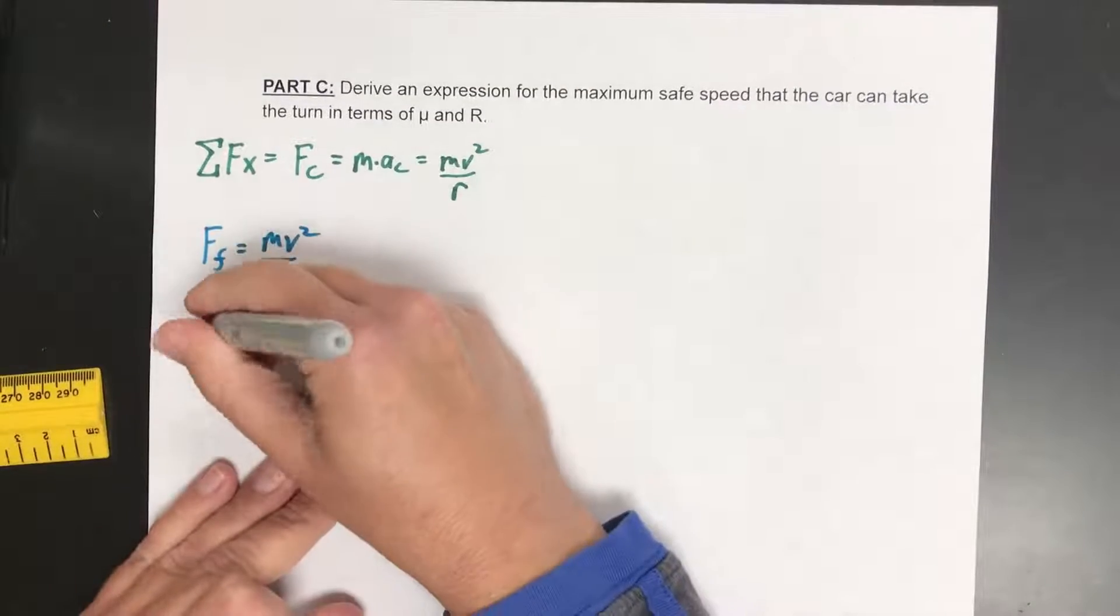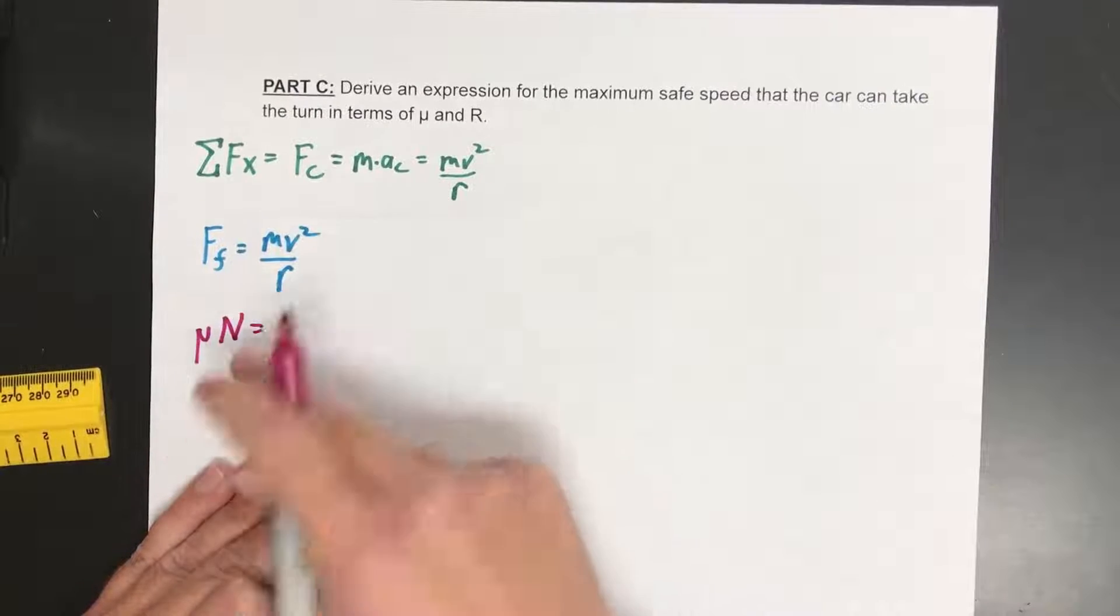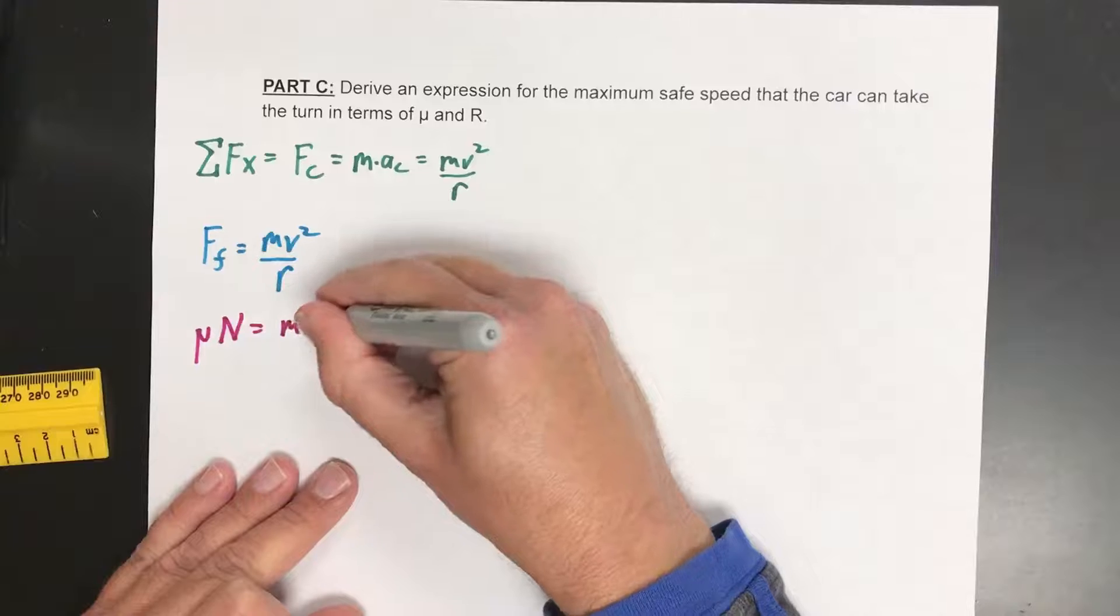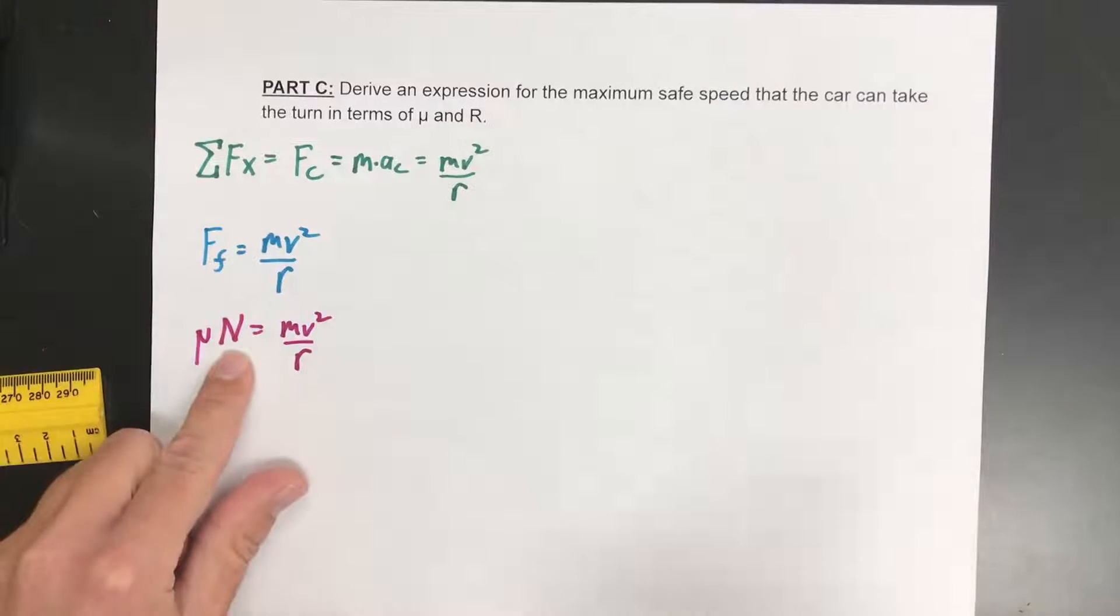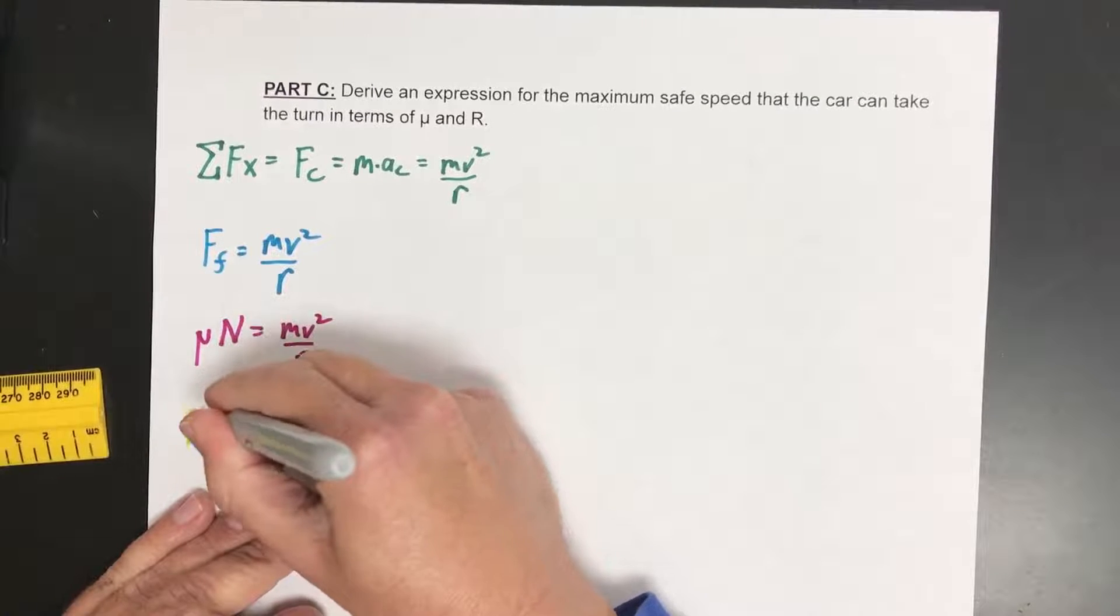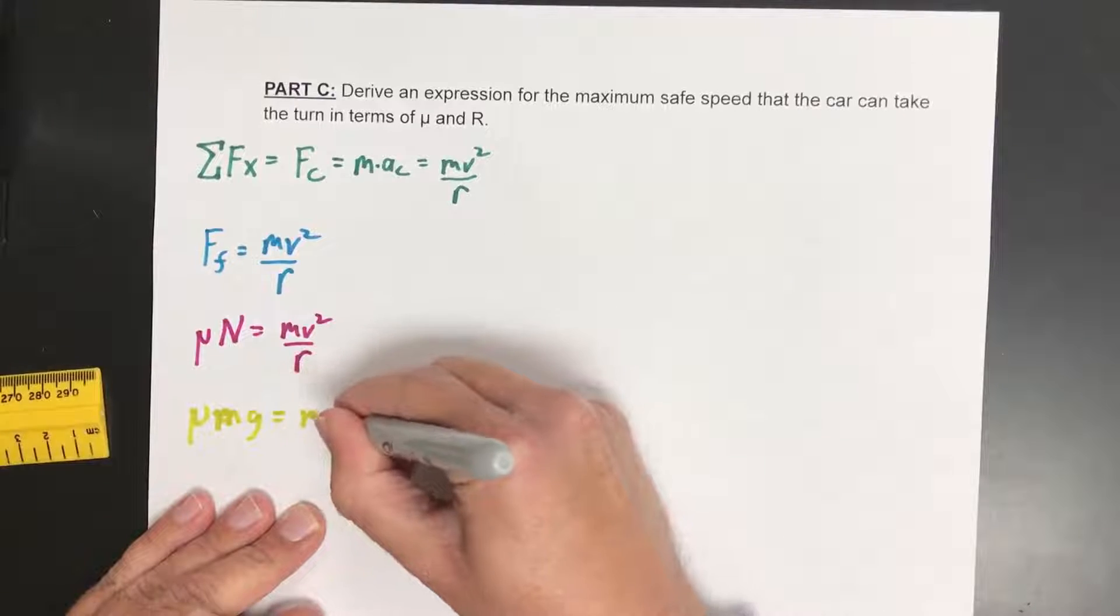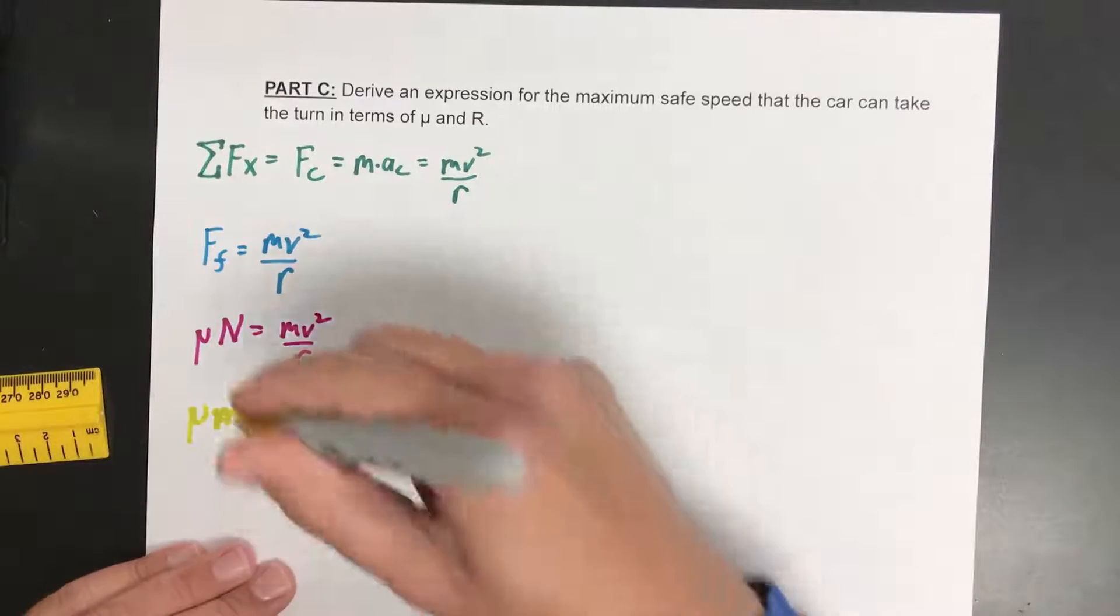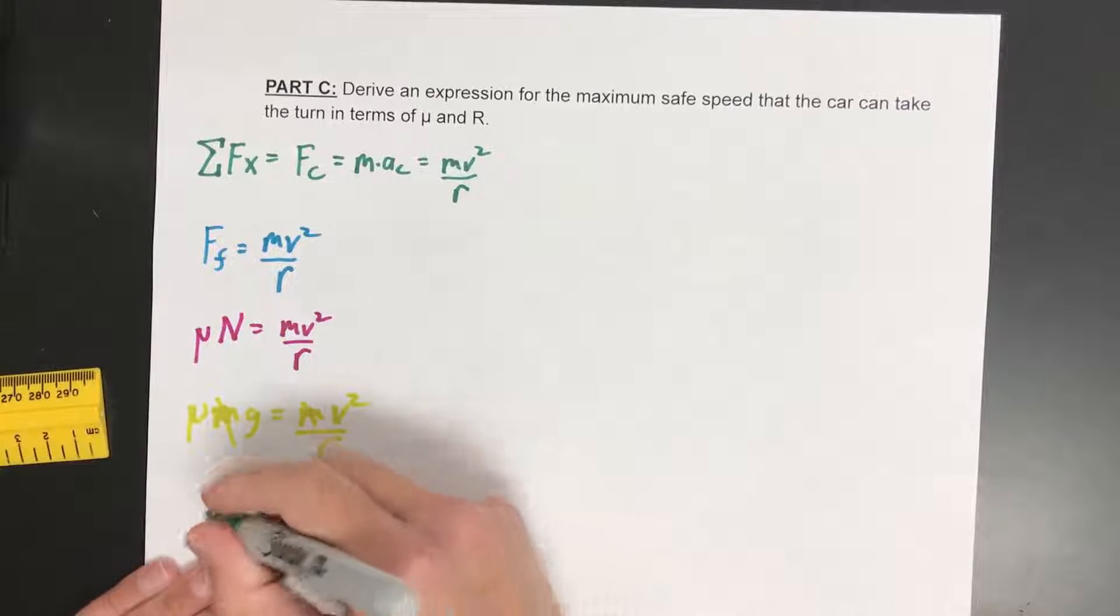So let's plug in for the force of friction. Mu times normal force equals mv squared over r. Now it's sitting on a flat surface, so the normal force will be equal to the weight. So the coefficient times mass times gravity will be equal to mass times velocity squared over r. There's a mass here and a mass here, so as in so many centripetal problems, it cancels out.